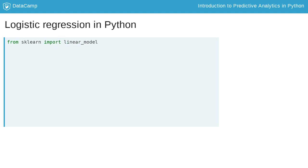You can build the logistic regression model using the module LinearModel from scikit-learn. First, you create a logistic regression model object using the logistic regression function. Next, you need to feed data to the logistic regression model so that it can be fit.